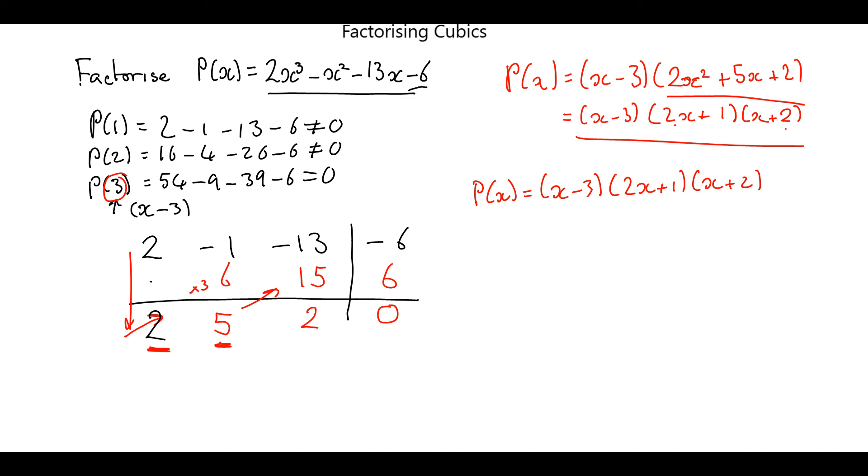Using these values, the 2, the 5, and the 2, to give us 2X squared plus 5X plus 2, we factorize that in the normal way, which we can either do by just looking at it and working it out, or we could have done it using the methods that I've shown you previously. And that gives us our answer.